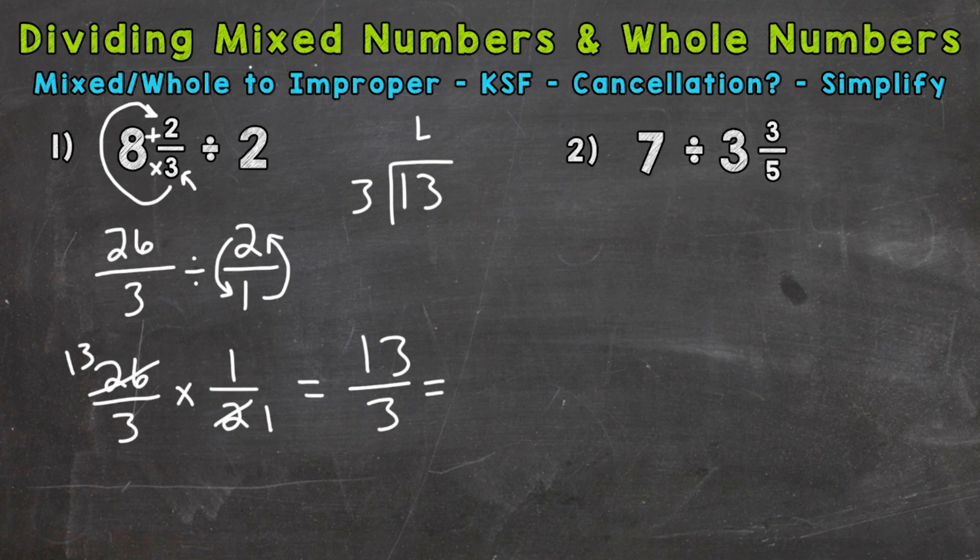Well, 4. That gets us to 12. 4 times 3 is 12. Subtract, we get a remainder of 1. So 4 is going to be our whole number portion. We could do 4 whole groups of 3 out of that 13 with a remainder of 1. So that's our numerator. And we keep our denominator of 3 the same. So we get 4 and 1/3. Always check to see if you can simplify the fractional part. But 1/3 is simplified. So we are done. 4 and 1/3.